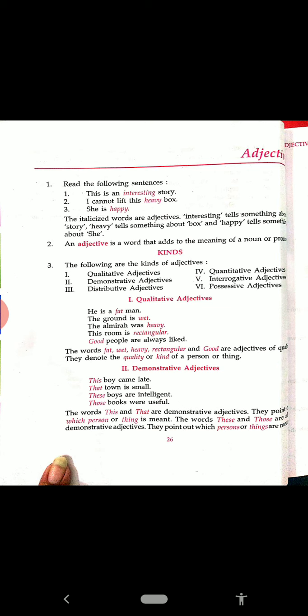Number two, what is written? An adjective is a word that adds to the meaning of a noun or pronoun, that modifies, that qualifies a noun or a pronoun. Number three, it is the kinds of adjectives.